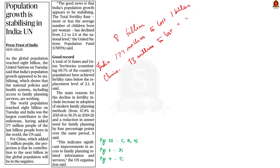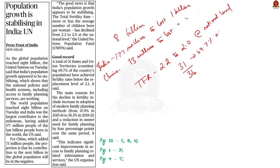The UN said that India's population growth appears to be stabilizing, and the total fertility rate in India has declined from 2.2 to 2.0 at the national level. The UN also said that out of the total 36 states and union territories of India, 31 states and UTs, which constitute about 69.7% of the country's population, have achieved fertility rates below the replacement level of 2.1. The main reasons include increase in adoption of modern family planning methods and a reduction in unmet need for family planning.